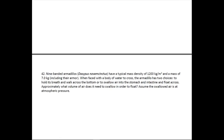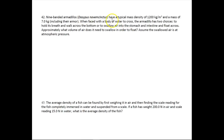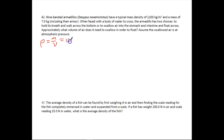For the next problem, number 42, it says nine-banded armadillos have a typical mass density of about 1,200 kilograms per meter cubed and a mass of 7 kilograms including their armor. When faced with a body of water to cross, the armadillo has two choices: they can either hold their breath and walk across, or they swallow a bunch of air into the stomach and intestine and float across. We want to know approximately what volume of air it needs to swallow in order to float, assuming the swallowed air is at atmospheric pressure. Right off the bat, we're going to say that density equals mass per unit volume, equal to 1,200 kilograms per meter cubed.